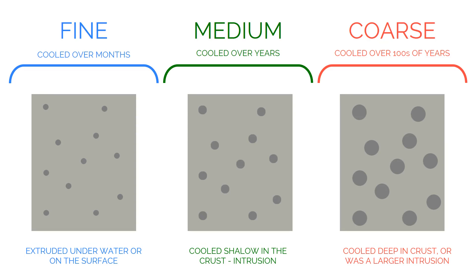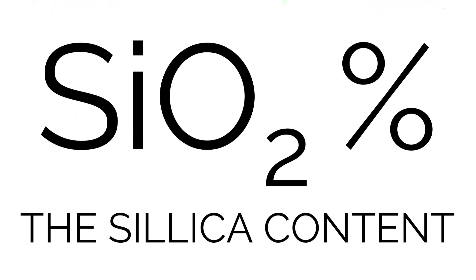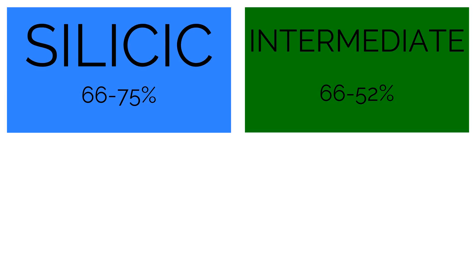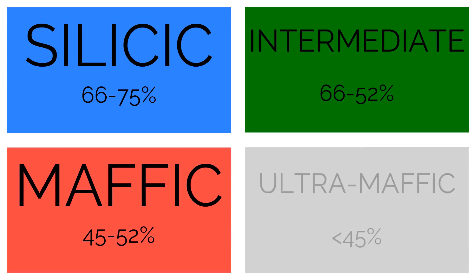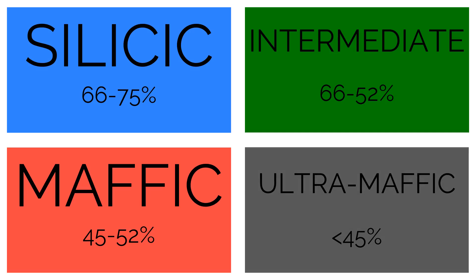Just classifying by grain size doesn't really say much, so another classification is also used. By identifying the amount of silicon dioxide, or the silica content, we can group rocks into four types: silicic, intermediate, mafic, and ultramafic. While it seems like it would be quite hard to determine this in the field, it is relatively easy to get a rough indication simply from the visible minerals and the overall colour, also known as the aspect.